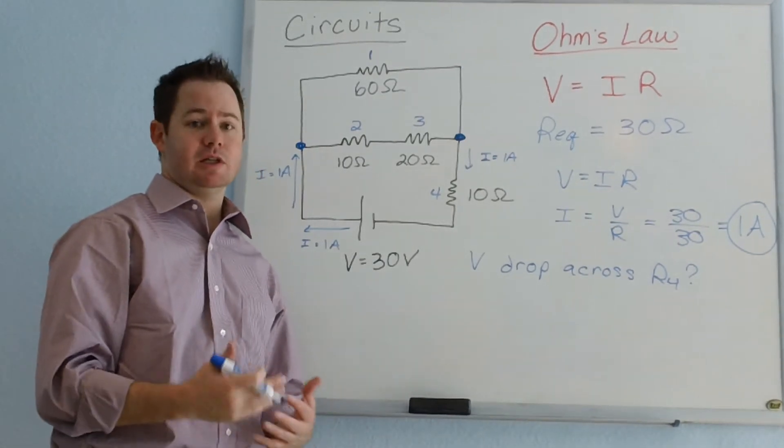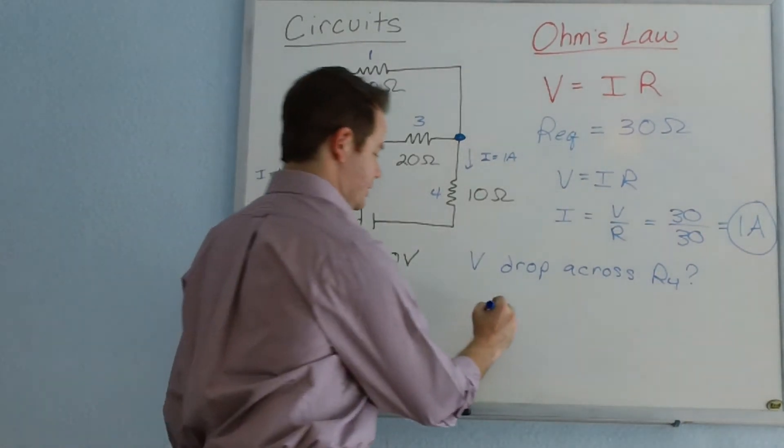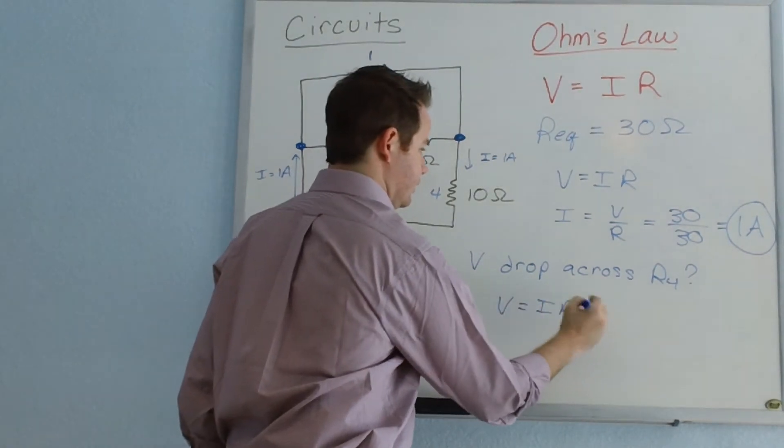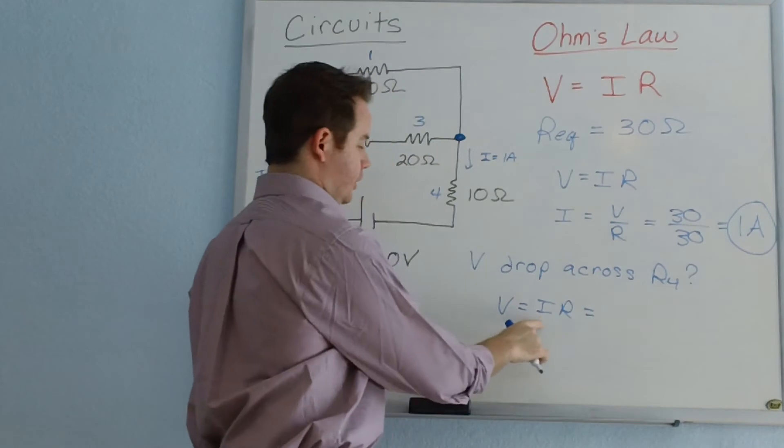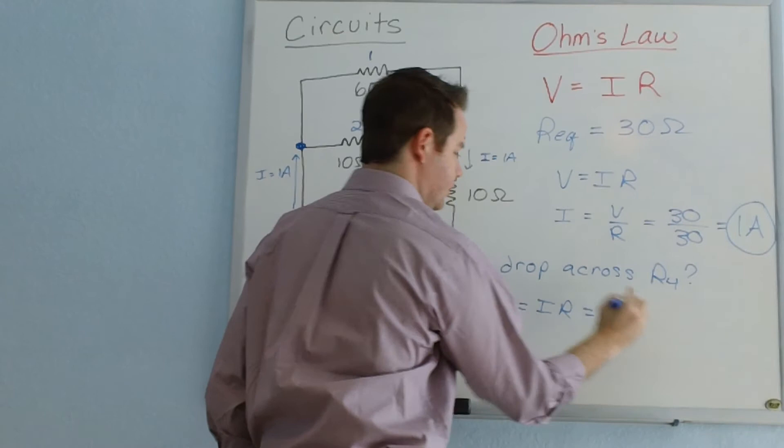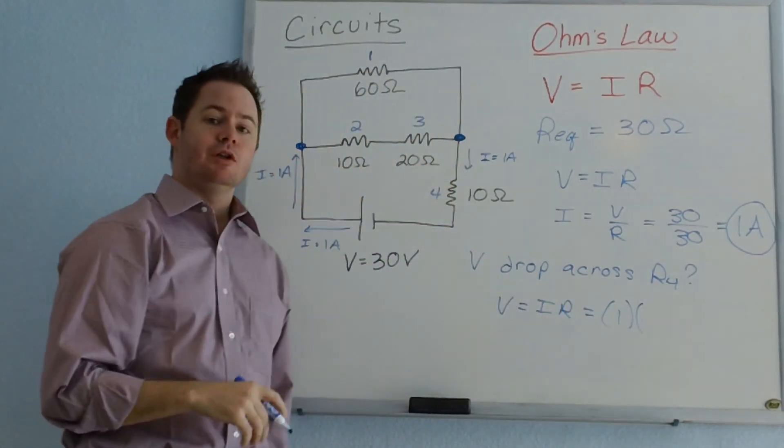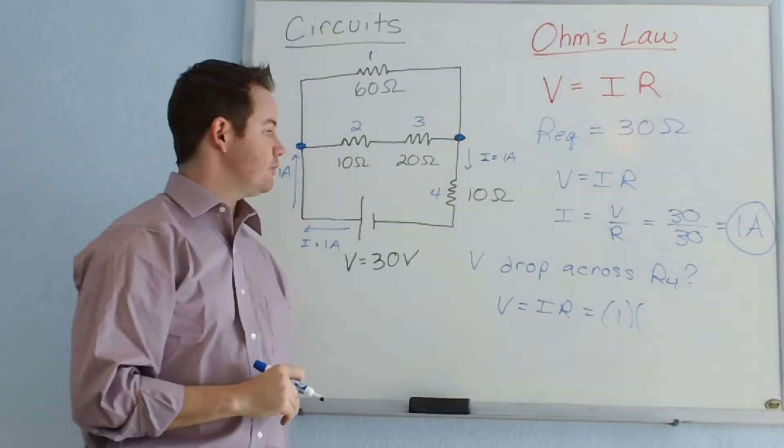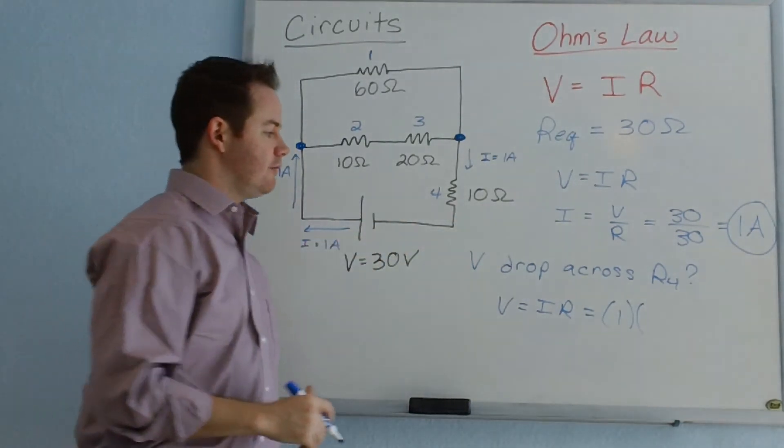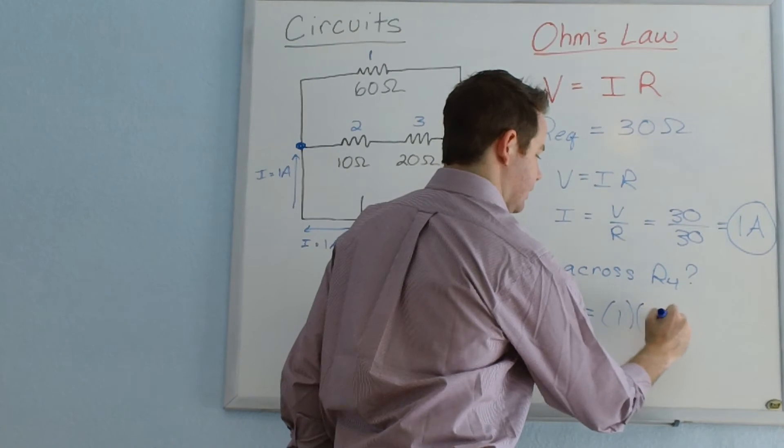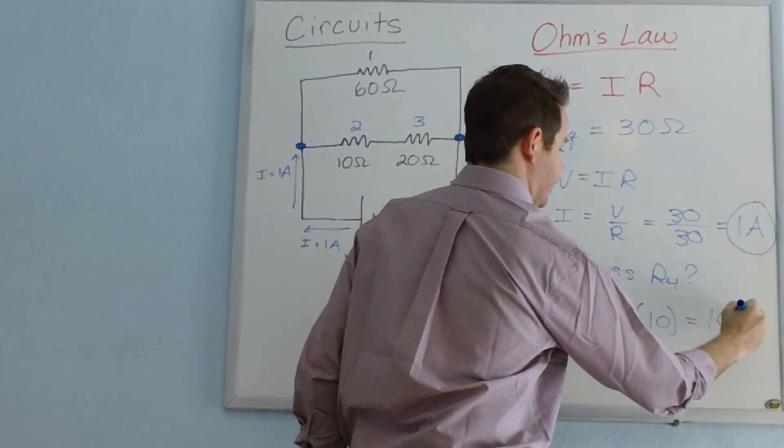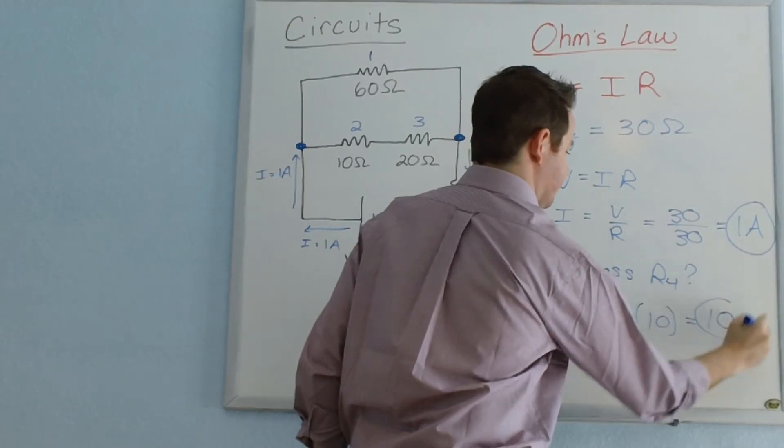To find that voltage drop, we're solving for V. And here, for current, we see the current passing through this resistor is 1. And for R, the voltage drop across resistor 4 is going to be dependent upon the resistance of resistor 4. So the value we're going to plug in for R is 10 ohms, and we find that the voltage drop across that resistor will be 10 volts.